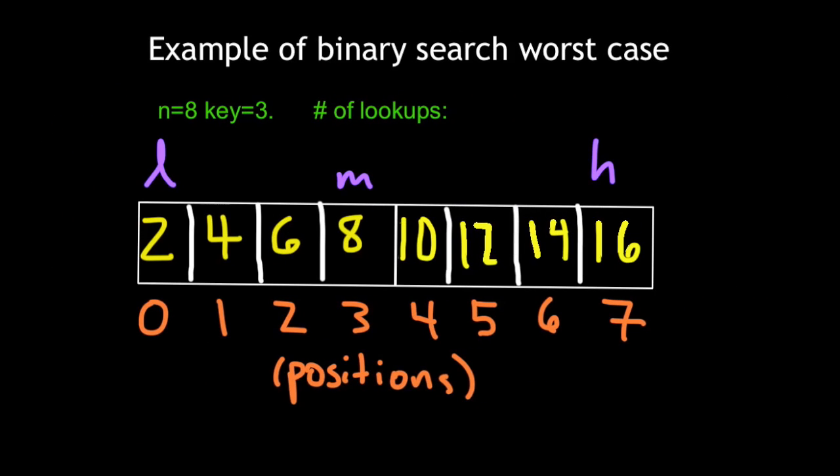So here's an example of where we're looking through the key of 3 inside of the list 2, 4, 6, 8, 10, 12, 14, 16. So we can see that the key of 3 is not in this list. And we're going to perform binary search on it and count the number of lookups we make.